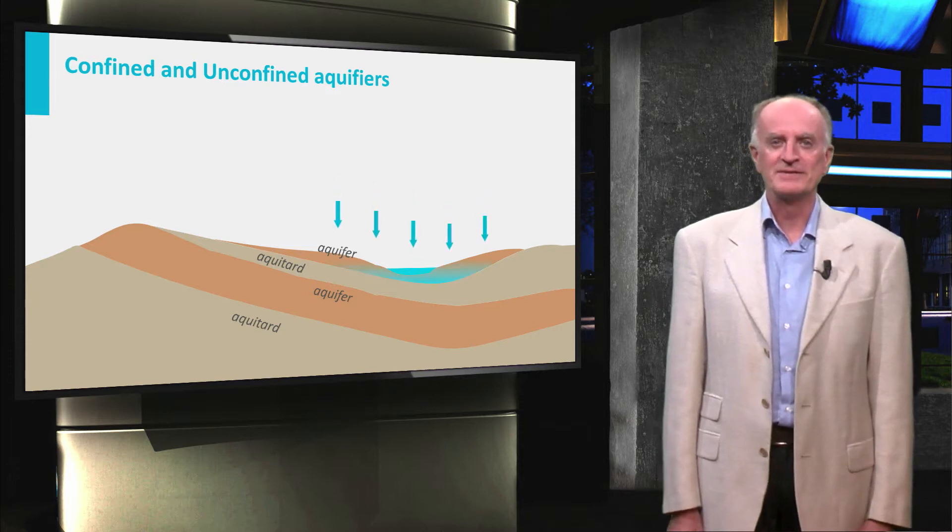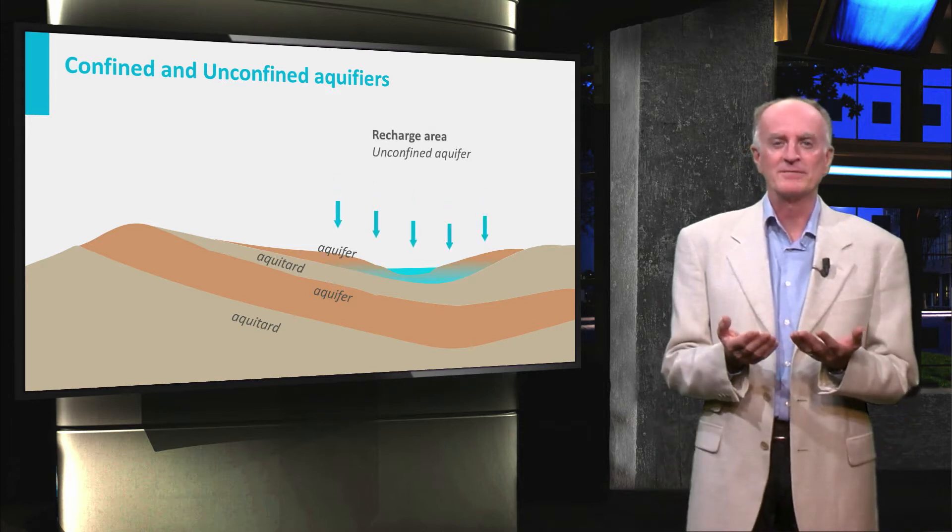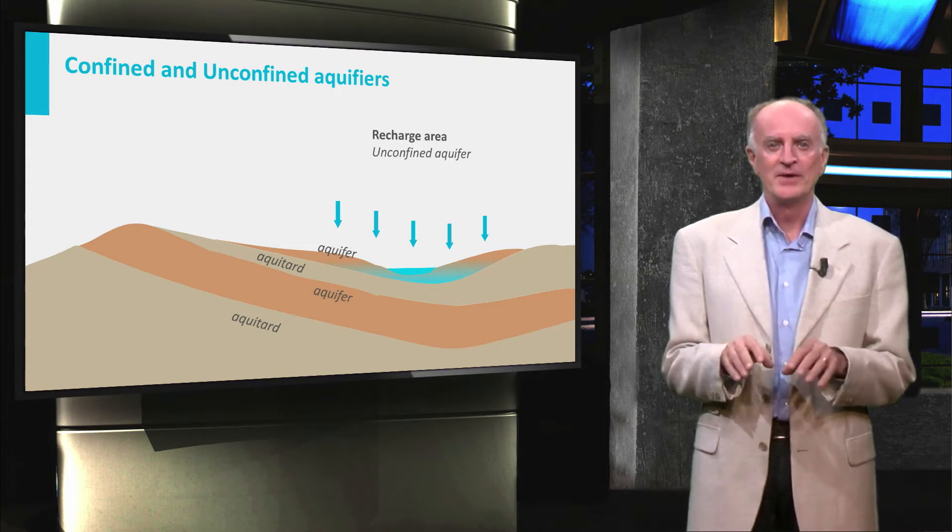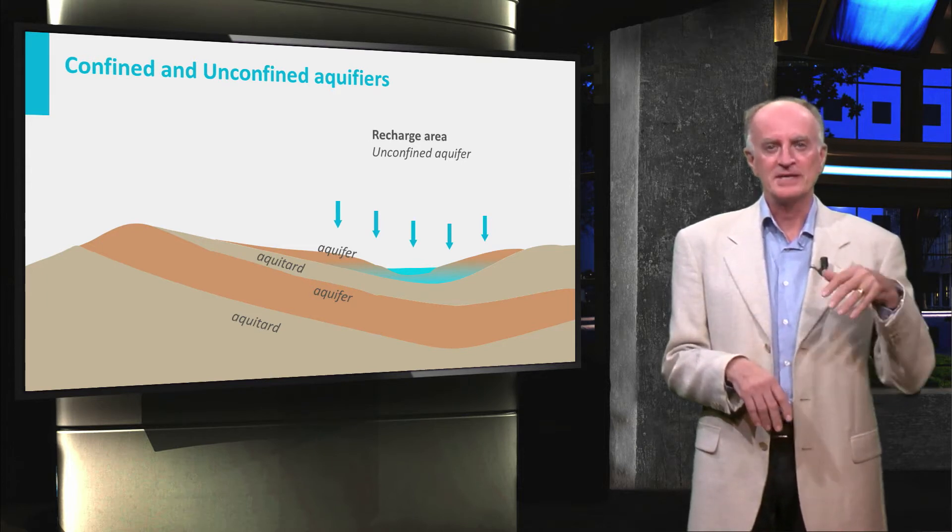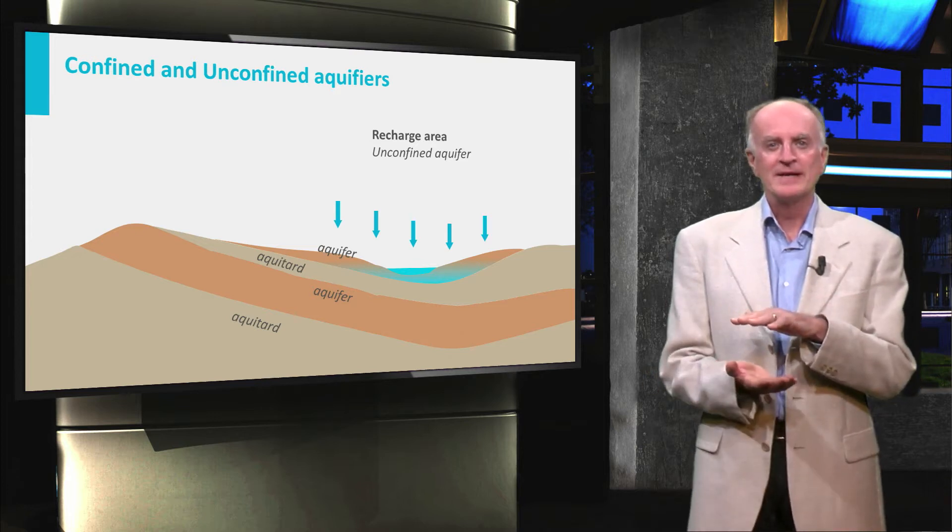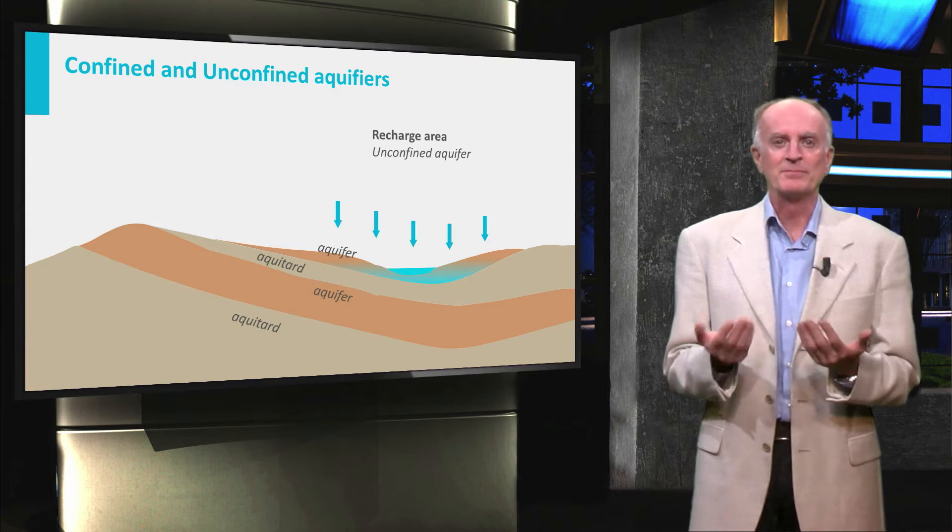Unconfined aquifers develop when the uppermost part of the Earth's subsurface is formed by permeable rocks. Water from precipitation infiltrates the ground, is blocked by an impermeable layer and starts saturating the permeable medium.